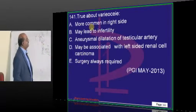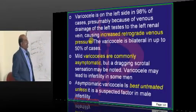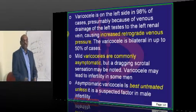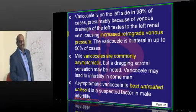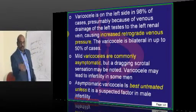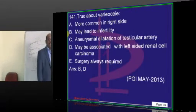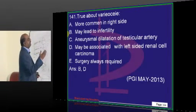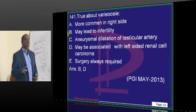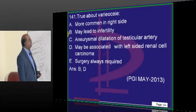Varicocele is more common on the left side because the left testicular vein drains into the left renal vein, whereas the right side drains into the larger IVC (easier drainage). On the left, drainage into a narrower vessel causes back pressure, leading to varicosities in the pampiniform plexus. Varicocele can lead to infertility, and rapidly developing left-sided varicocele should raise suspicion of left renal carcinoma.